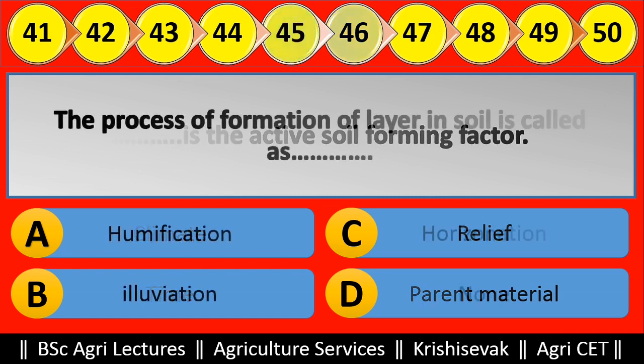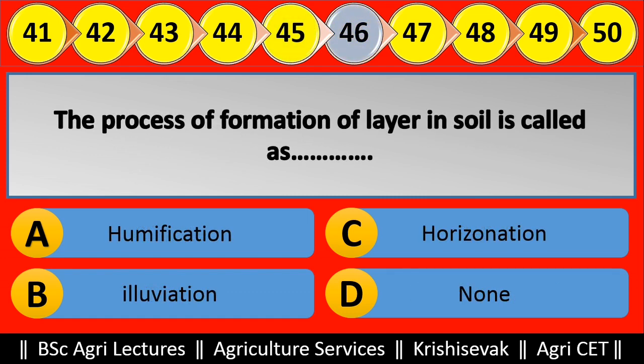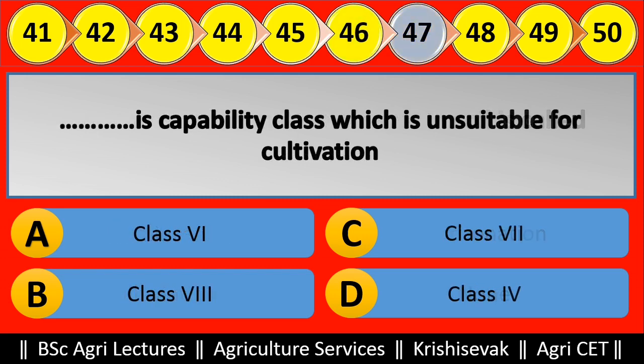Question 46: The process of formation of layers in soil is called blank. Options are: (a) Humification, (b) Eluviation, (c) Horizonation, (d) None. Right answer is Horizonation, option C.